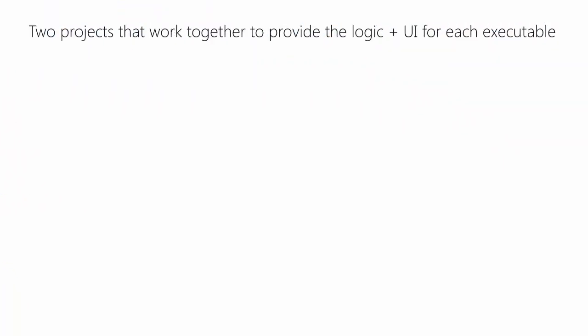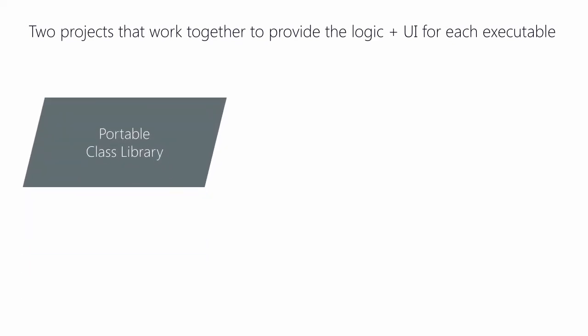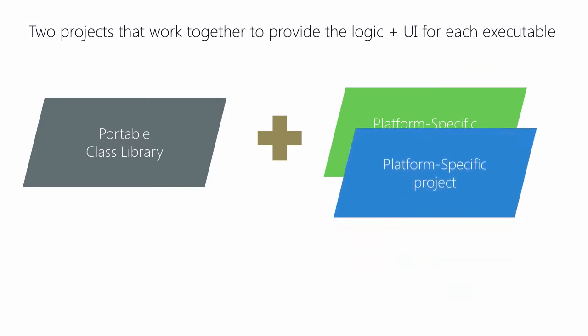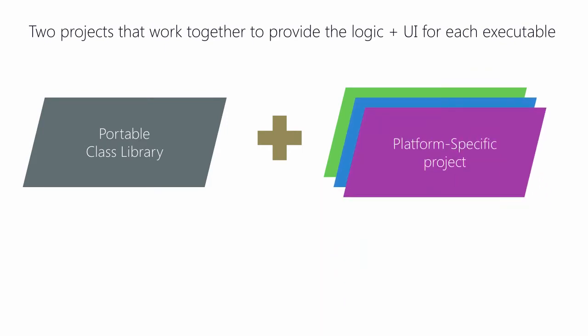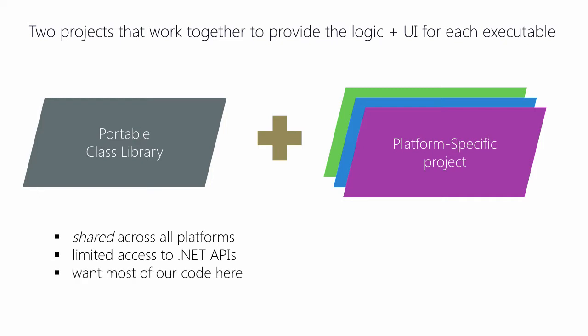In Xamarin Forms, remember that each of our applications is made up from two components: shared code — the portable class library — which holds our logic and UI definition, and the platform-specific projects, which are the actual applications we will deploy to the devices and app stores. The PCL is great because it's shared, but it has significant limitations in terms of the APIs we can use. Many platform features which make iOS, Android, and Windows Phone unique are unavailable to us.